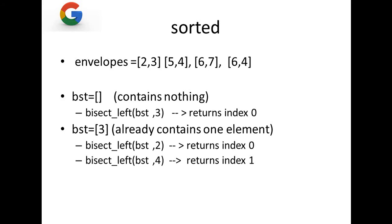If BST contains [3] and we call bisect_left(BST, 2), the returned index is 0, because 2 is less than 3 and would be placed at position zero. If instead we call bisect_left(BST, 4), the returned index is 1, because 4 is greater than 3 and would be placed after it. I hope you understand how this function works — with bisect_left, the problem becomes straightforward.